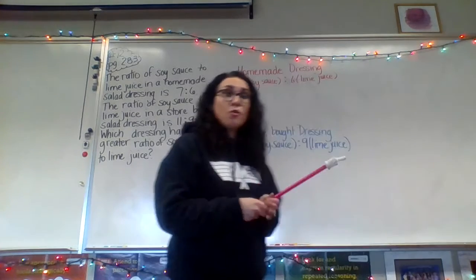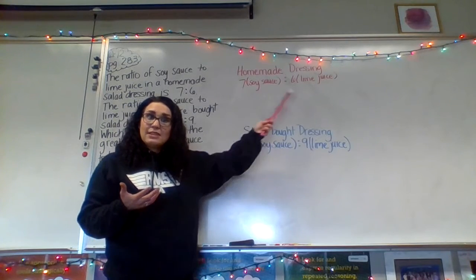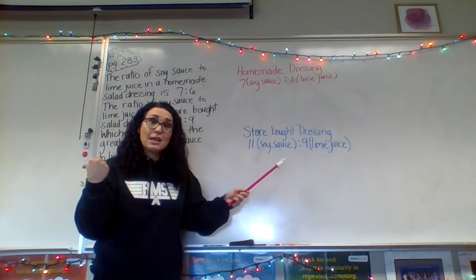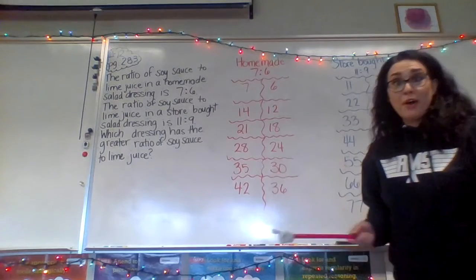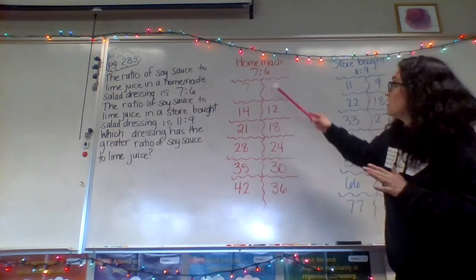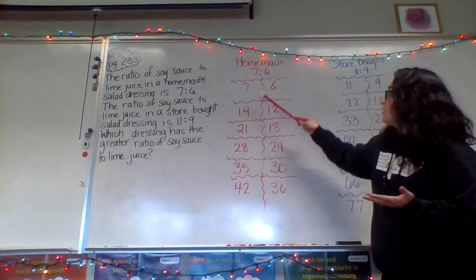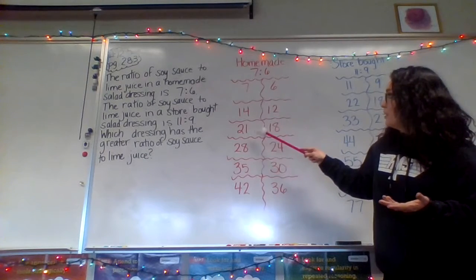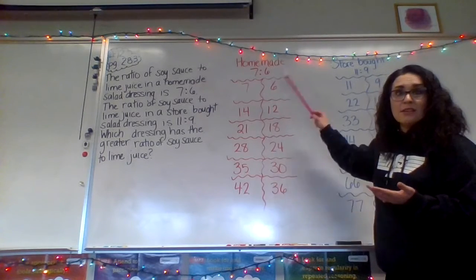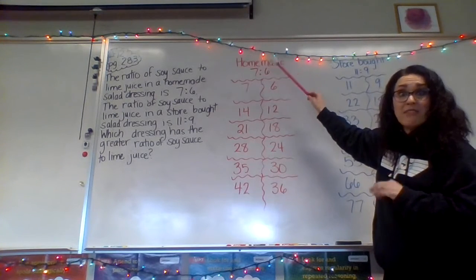I've written down both ratios: homemade is seven to six, store-bought is 11 to nine. Just like with the fish problem, let's make a table. For the homemade dressing, we create equivalent ratios: seven to six, 14 to 12, 21 to 18, 28 to 24, 35 to 30, 42 to 36. If you simplified any of these, they'd all reduce back to seven to six — our original ratio.